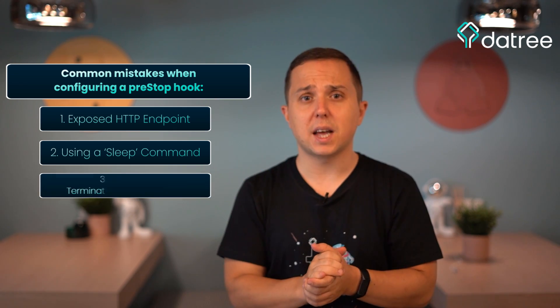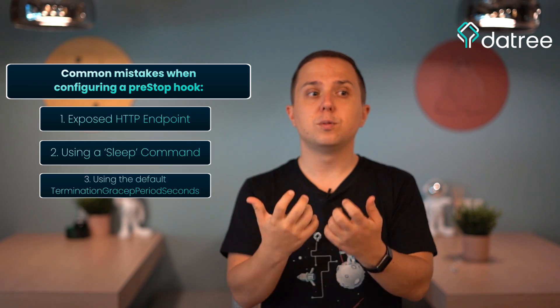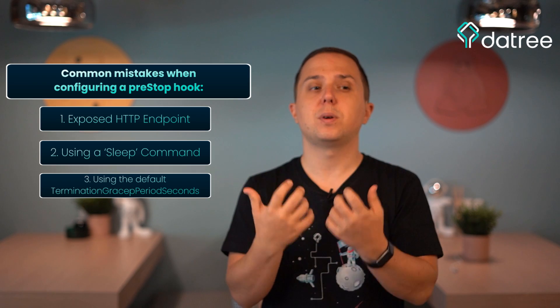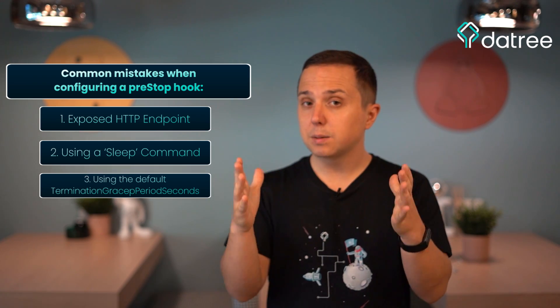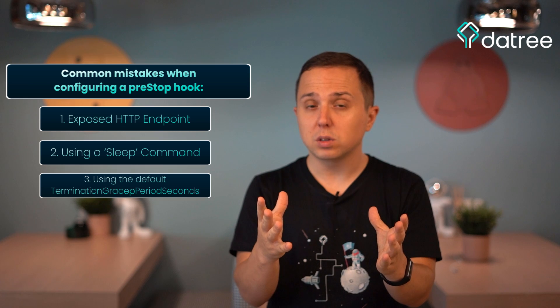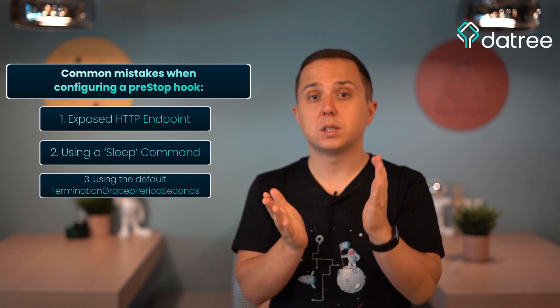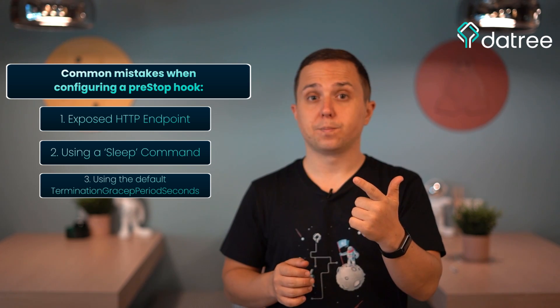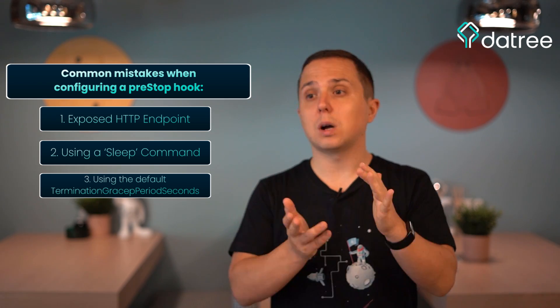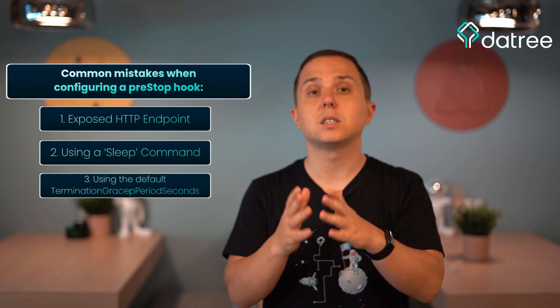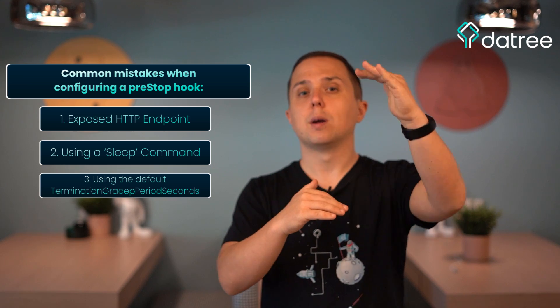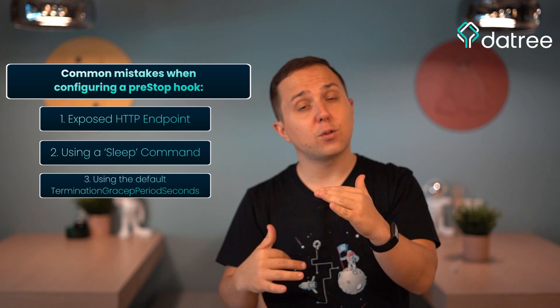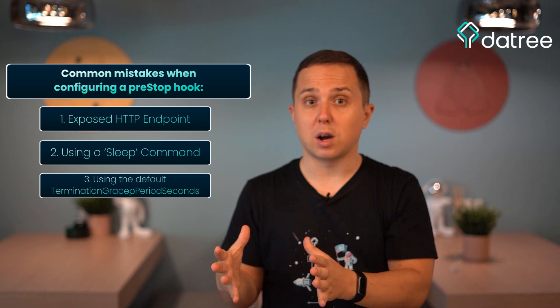The number three most common mistake is that people forget to change the default setting for terminationGracePeriodSeconds. This property defines the timeout that Kubernetes has to perform the shutdown sequence, and it includes both the pre-stop hook and the SIGTERM together. So make sure to increase it to one minute, two minutes, three minutes, or five minutes — as long as you need for the pre-stop hook to execute correctly and then for the SIGTERM to also be processed.